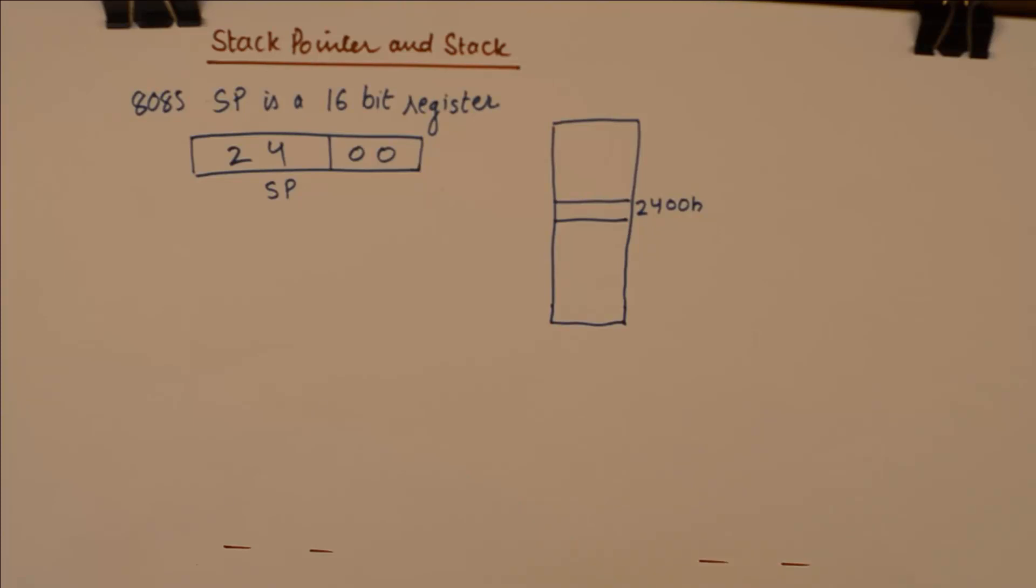My stack has a top on the memory location 2400H means that the temporary storage area - because I would define stack as a storage space, as a junk storage space similar to a store that we have in our homes. So anything that we would wish to store temporarily in a location we would store it in a stack.